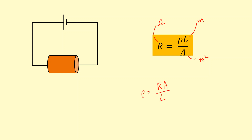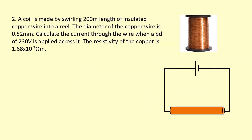Writing in terms of units, we have ohms times meters squared divided by meters. One of the meters squared on top is cancelled by the meter on the bottom, so the unit for resistivity is ohm meters (Ω·m).